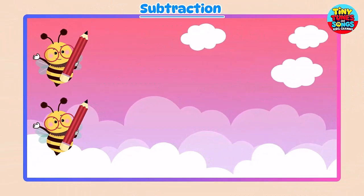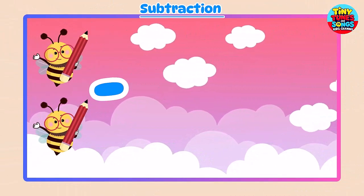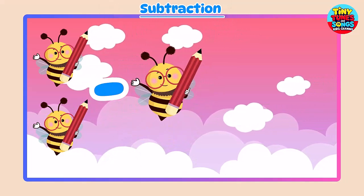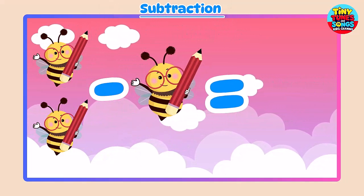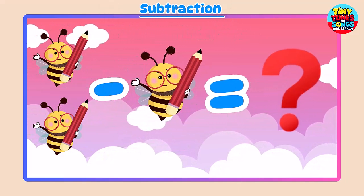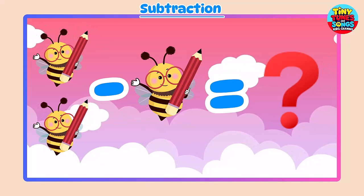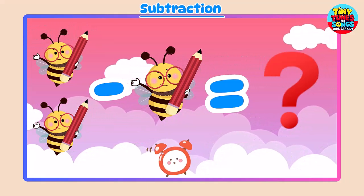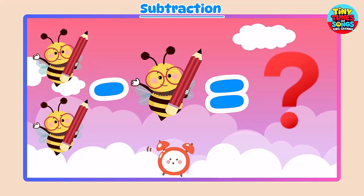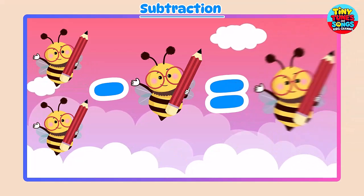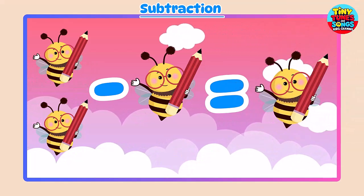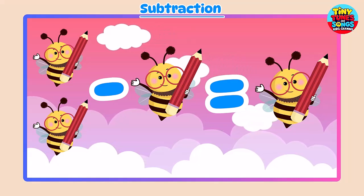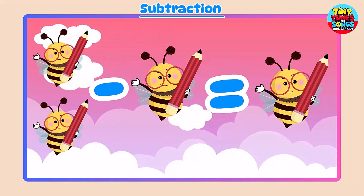Two B's minus one B equals — can you guess how many are left? One B! Great job! That is the correct answer. Yay!